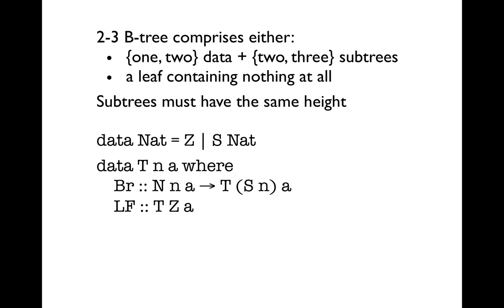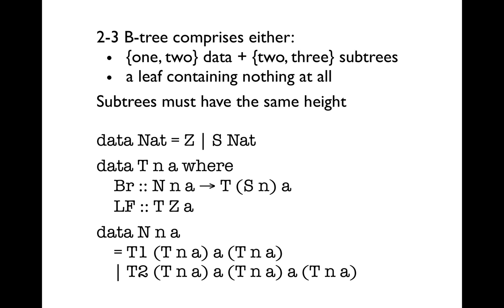We can now add a type index to our tree to reflect its height. So rather than describing trees of some element type, we now describe trees of a particular height and element type. Naturally, we define a leaf as a tree of height zero, and when an internal node has sub-trees at height N, we define the resulting branch node to have height S N. We also need to annotate the type of an internal node N with the same height as its components, but this only requires an ordinary Haskell data type.